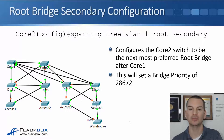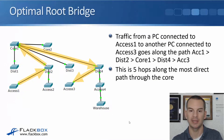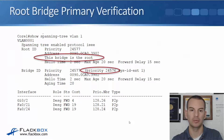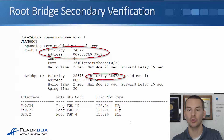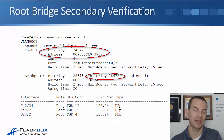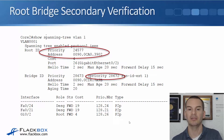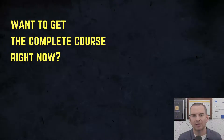That sets a bridge priority of 28672. So going back — for the primary it's 24576, and for the secondary it's 28672. I've gone on to Core 2 and verified it with show spanning tree VLAN 1. I can see that the root bridge is still on Core 1, and that Core 2 has got the next best priority. So this will be the second most preferred switch.